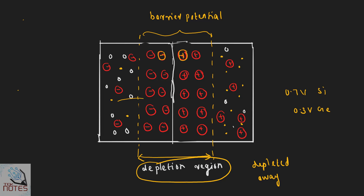Electrons are not moving, and holes are not moving. If you look at this junction, there is no current movement — no conduction. This PN junction has a barrier potential that prevents movement of carriers.